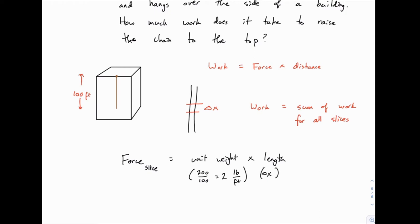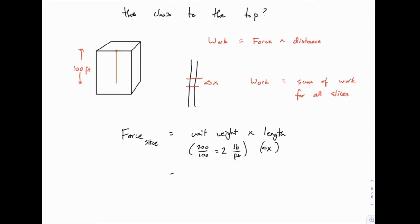So if we just divide the total weight by the total length, that's the weight per foot, and then no matter what delta x is, whether it's larger or smaller than a foot, if we multiply that by two, we get the weight of that one slice. So the force is just 2 delta x.